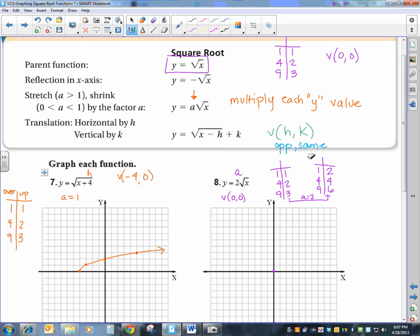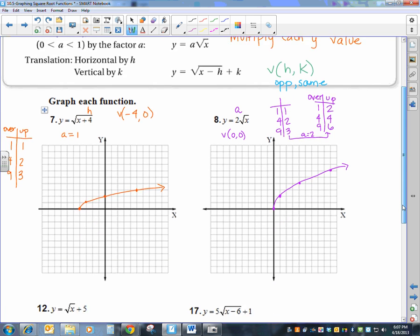So from (0, 0), and again remember this is over and up. So if I go over 1, I'm going to go up 2. If I go over 4, I'm going to go up 4. If I go over 9, I've got to go up 6. So I connect my points to make it look like a curve. And then we have our square root function of y equals 2 times the square root of x.